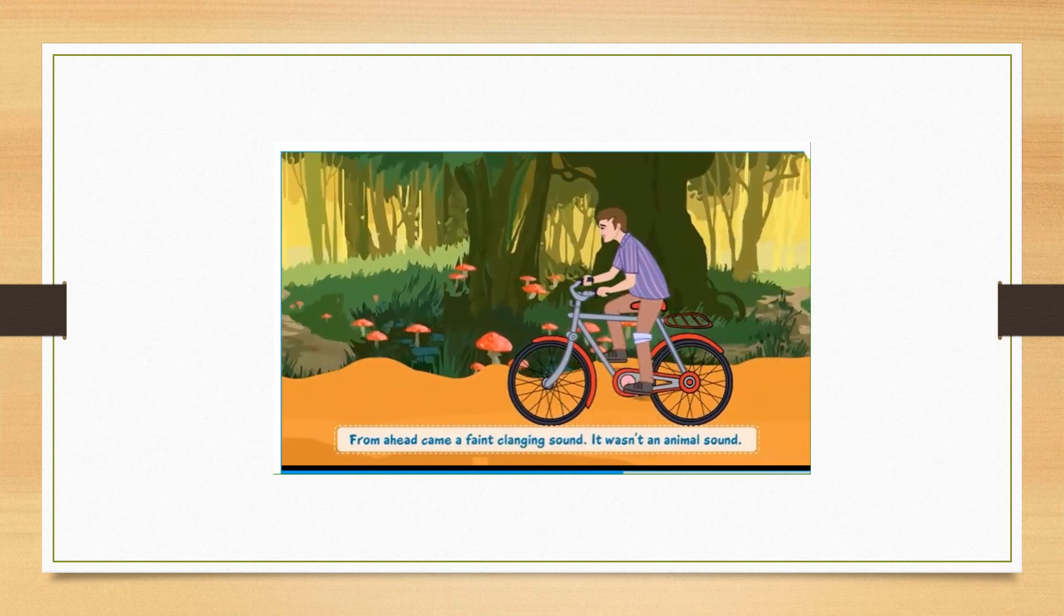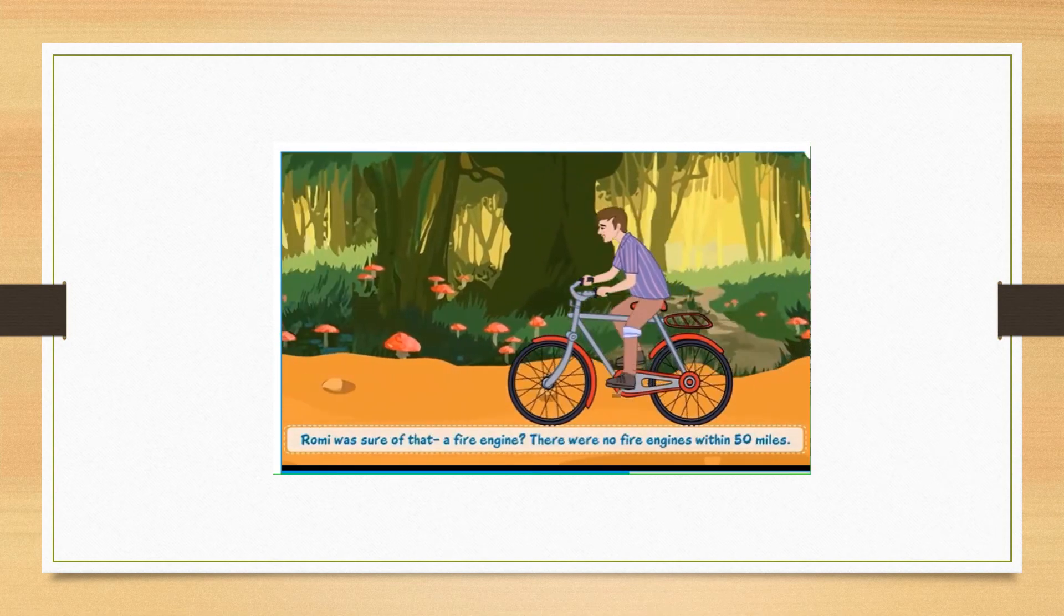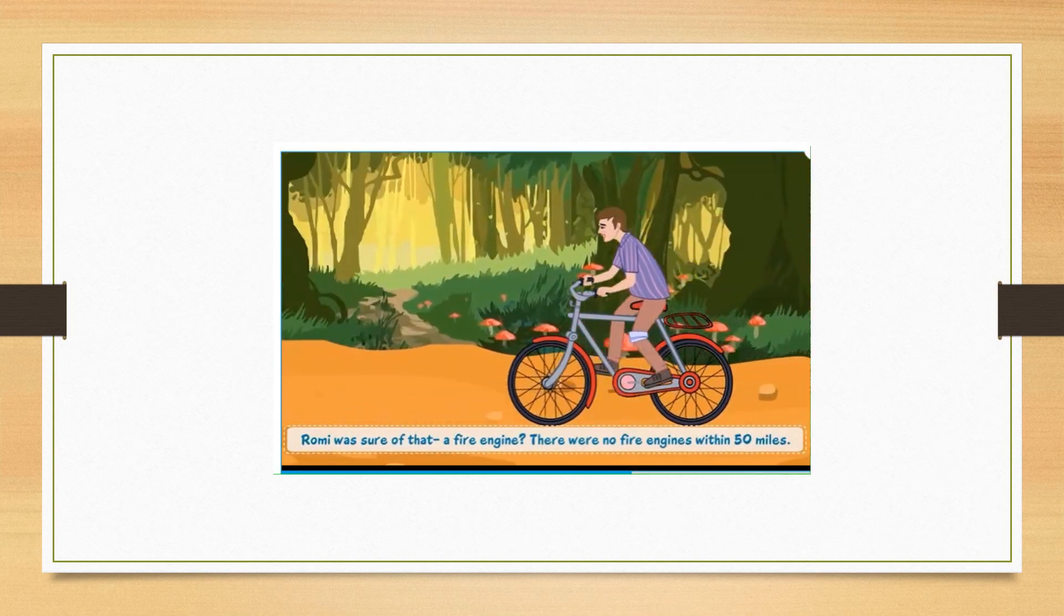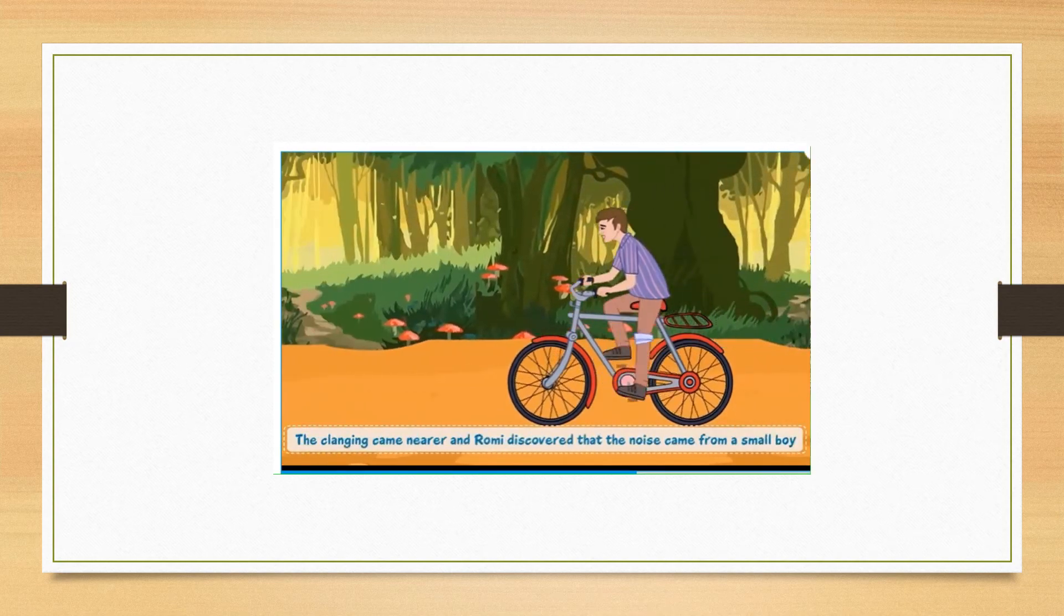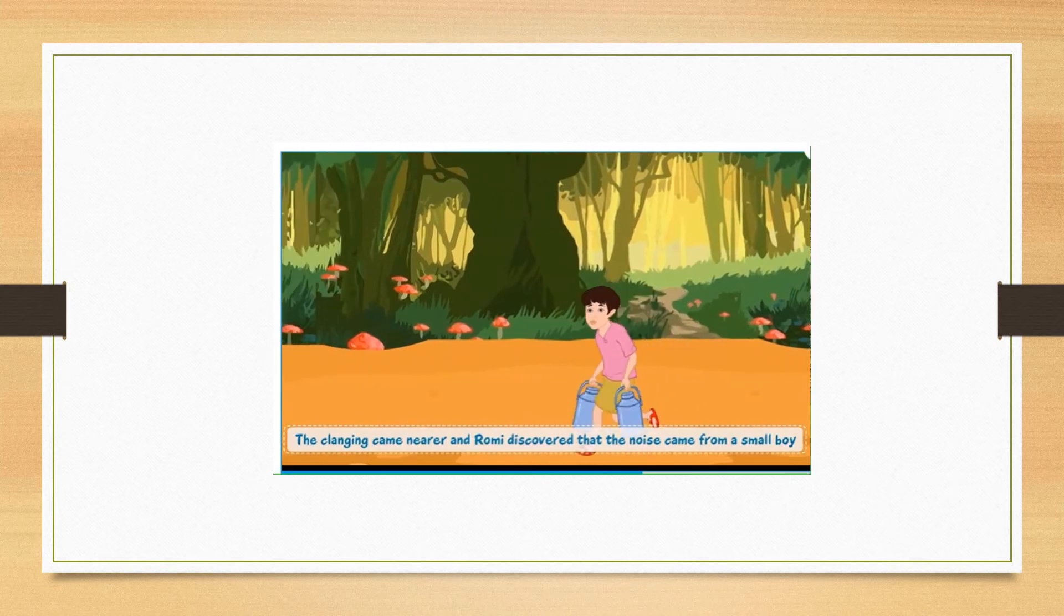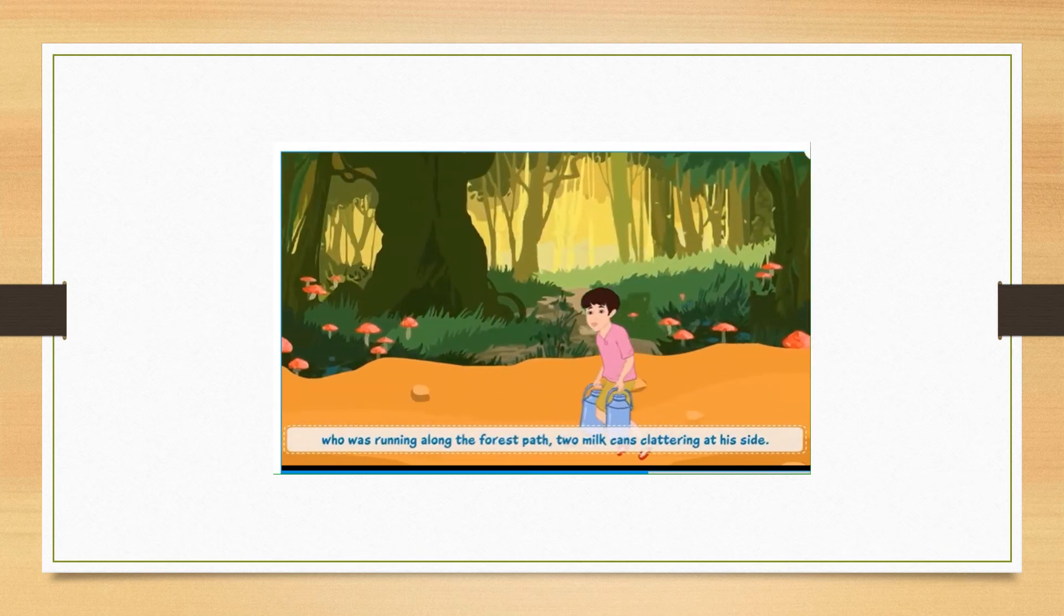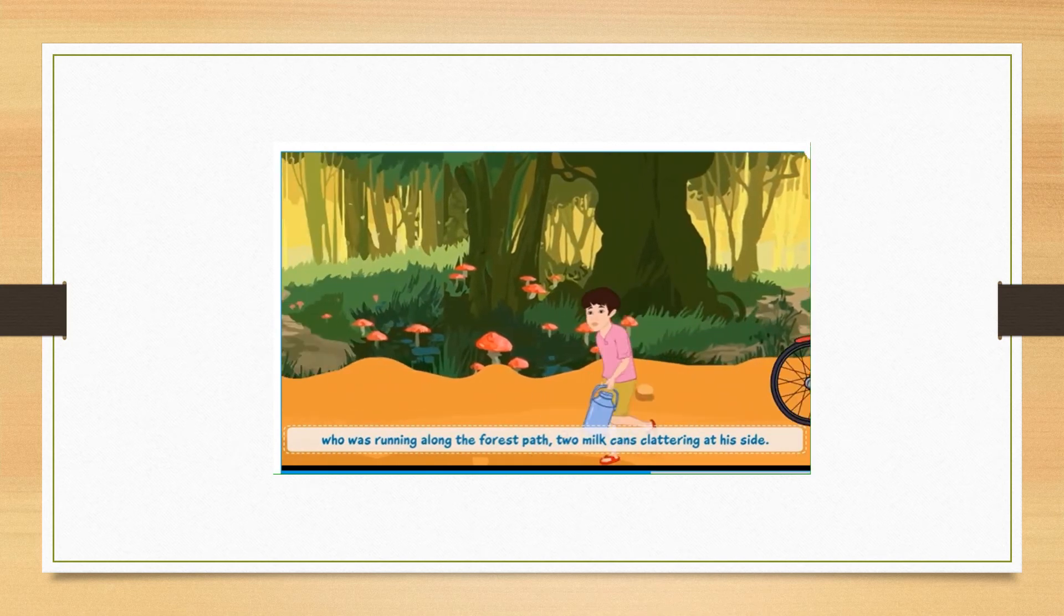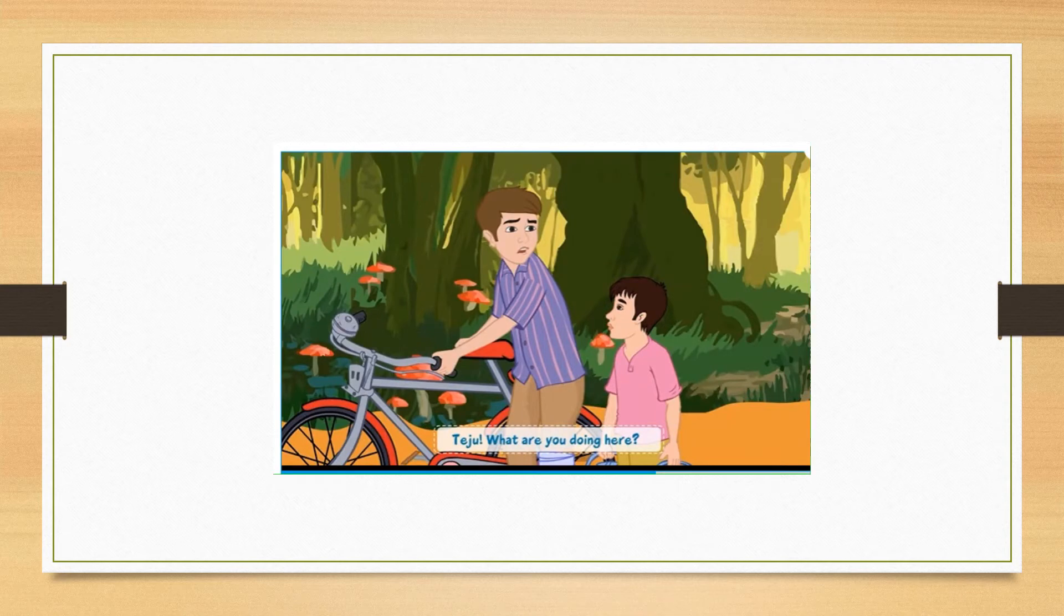From ahead came a faint clanging sound. It wasn't an animal sound. Romy was sure of that. A fire engine? There were no fire engines within 50 miles. The clanging came nearer and Romy discovered that the noise came from a small boy who was running along the forest path, two milk cans clattering at his side. Teju, what are you doing here?